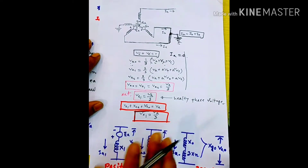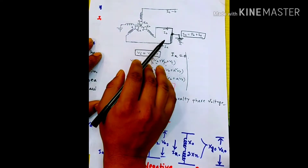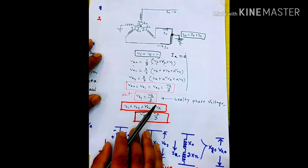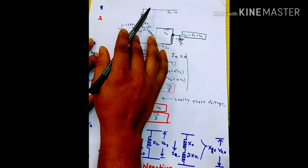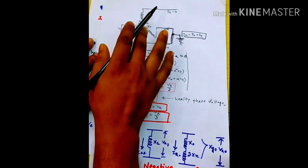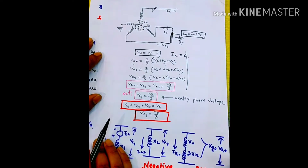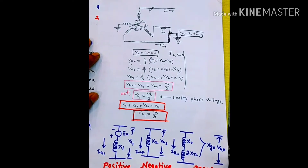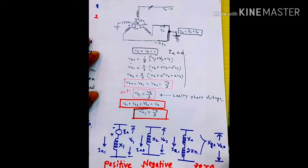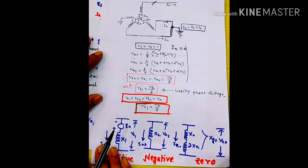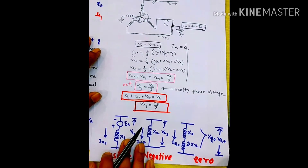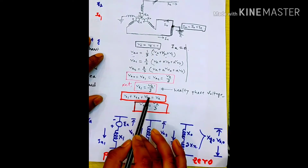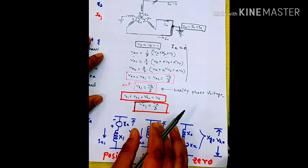Here we have one particular phase which is the faulty phase, and we have the healthy phase. The voltage axis and the current axis define these quantities. Looking at our figure, the healthy phase voltage is Va1, and the fault is represented by the current.